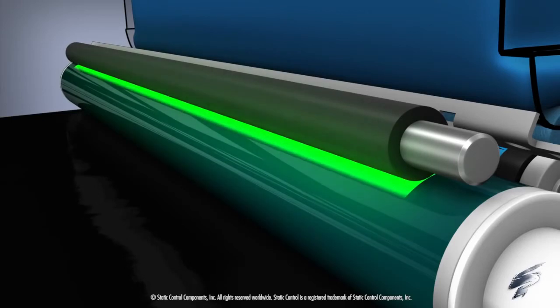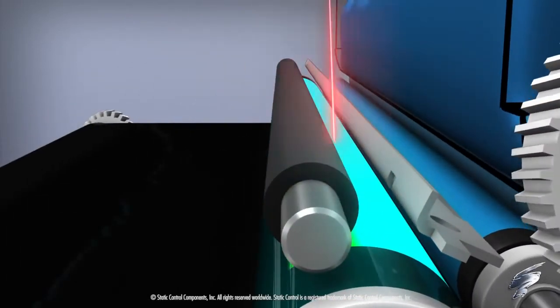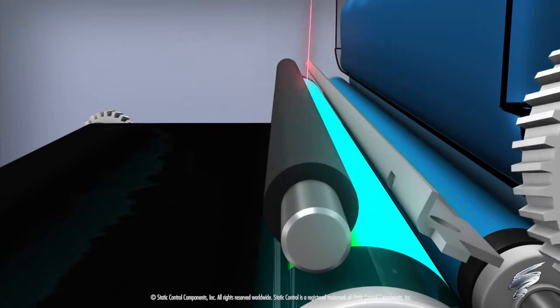The primary charge roller, or PCR, rotates next to the OPC drum and applies a negative charge to the surface of the OPC drum, which prepares it for the imaging process.